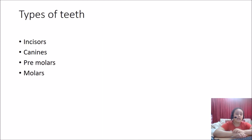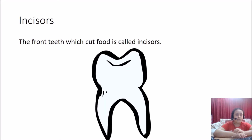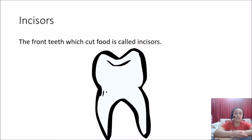Let's learn about the types of teeth: incisors, canines, premolars, and molars. The front teeth which cut and bite the food are called incisors. They are very flat. There are four incisors in each jaw, so there are eight incisors in total. Since they bite and cut the food, they are called biting teeth or cutting teeth.